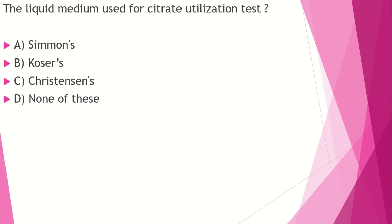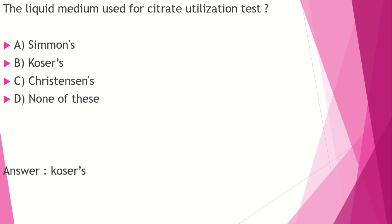Liquid medium used for citrate utilization test: Simmons citrate medium, Koser's medium, Christensen's medium, or none of these. Citrate is the sole source of carbon in the citrate test, used to detect organisms like Pseudomonas aeruginosa. Simmons citrate medium is a solid medium that turns blue. Christensen's medium is used for urea testing — urease-positive organisms like Helicobacter pylori. Koser's medium is the liquid medium used for citrate utilization.